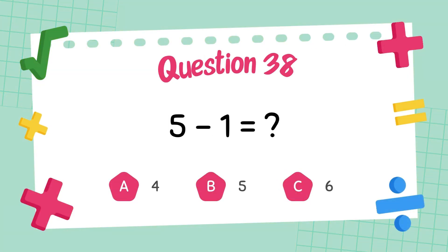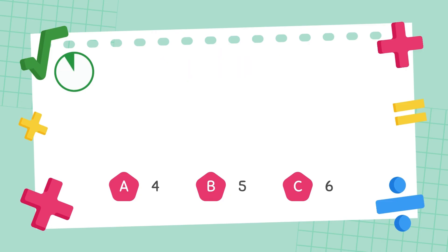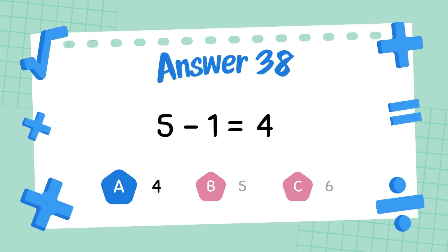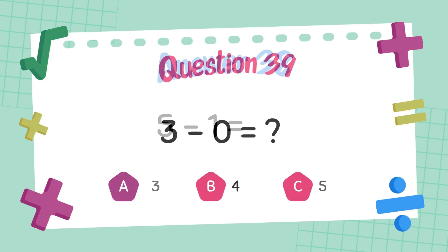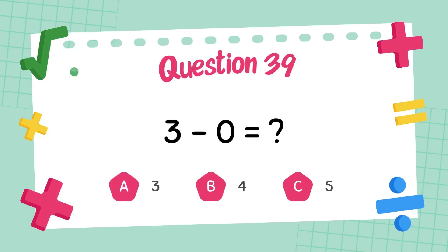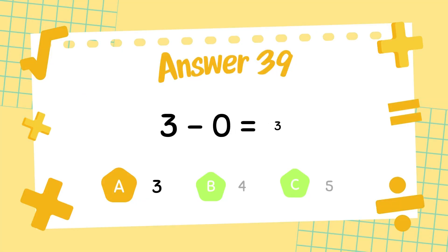What is 5 minus 1? The answer is 4. What is 3 minus 0? The answer is 3.